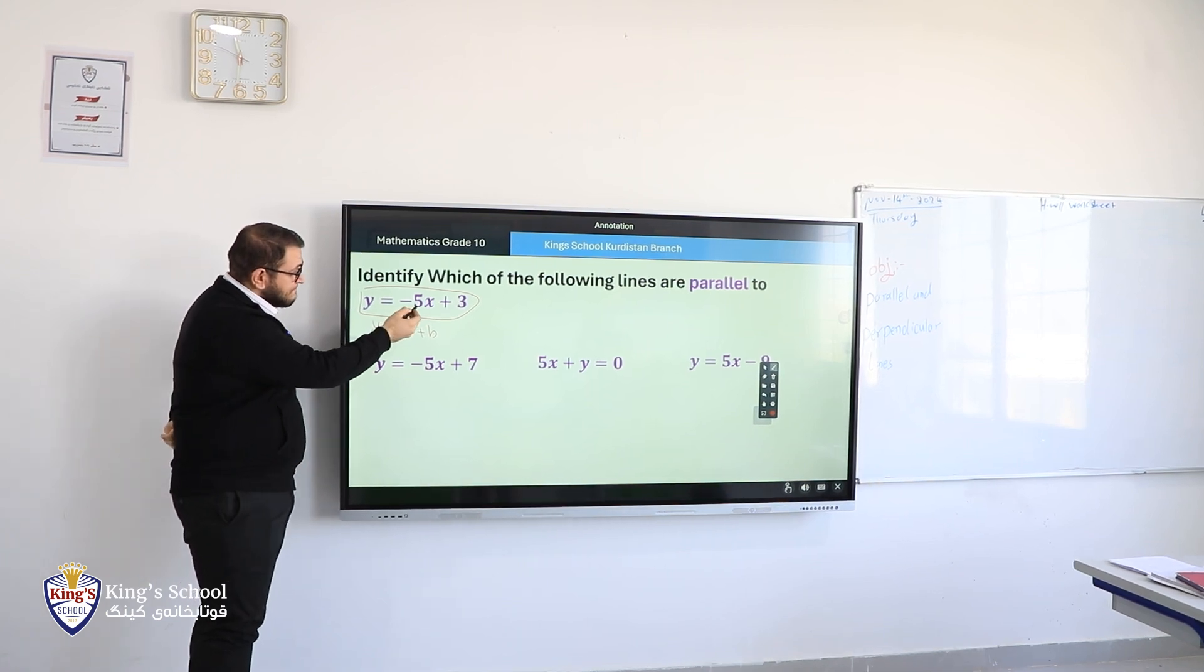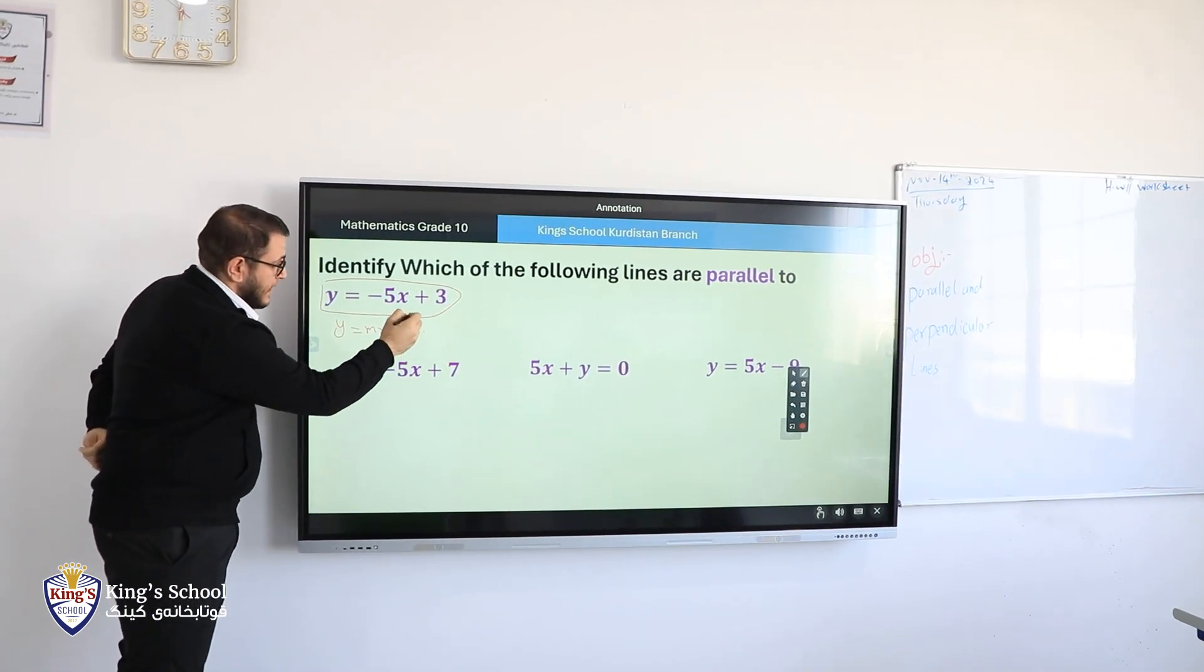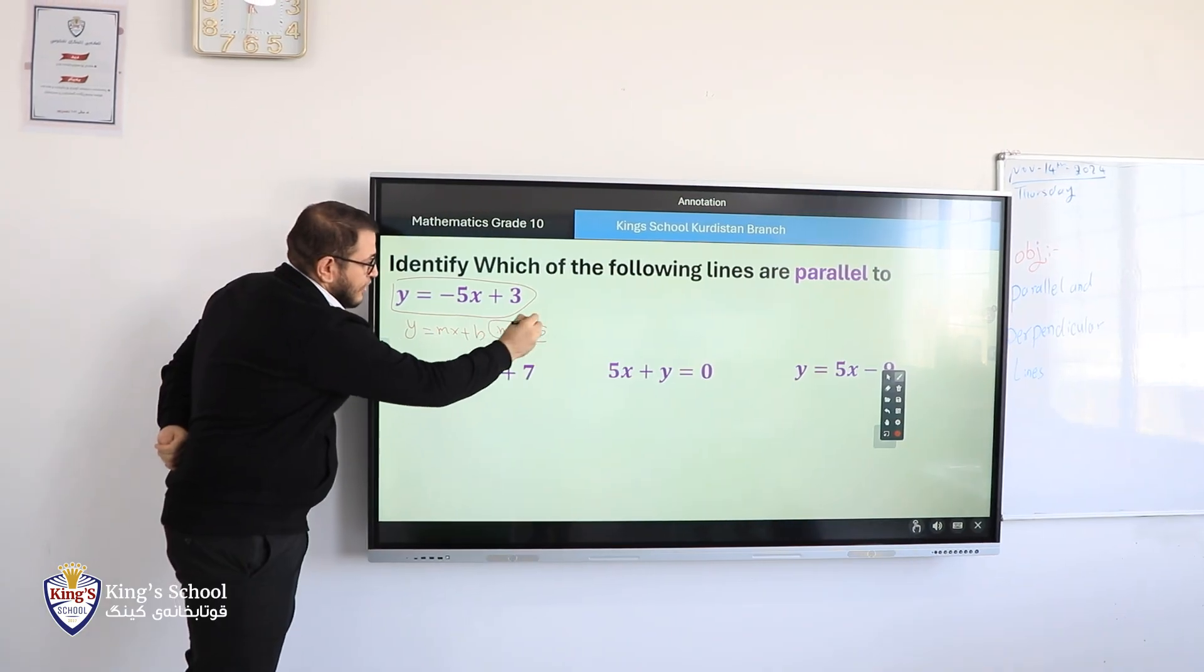Now, the slope here, how much? Negative 5. M equals negative 5. Okay.